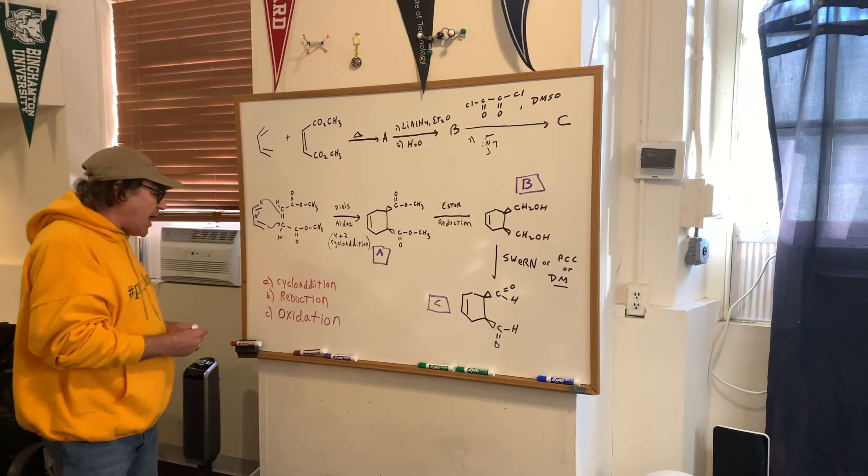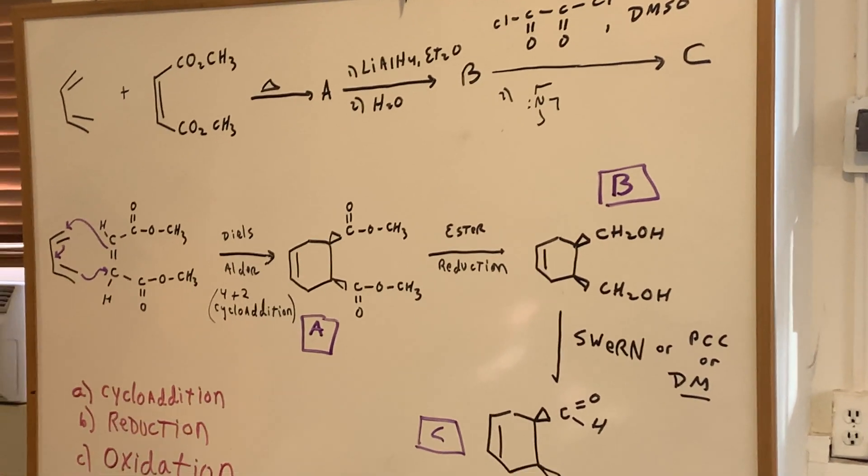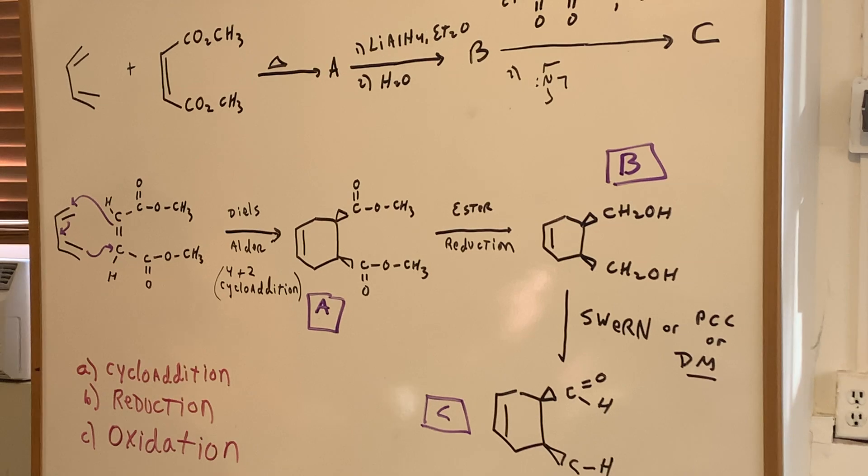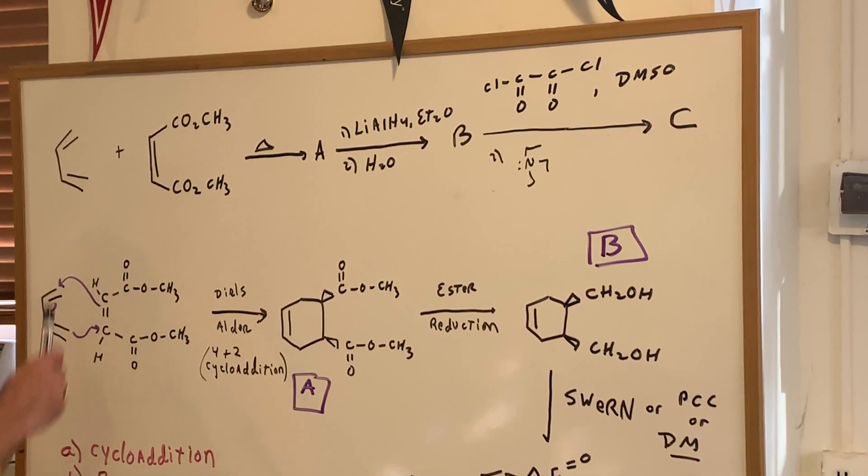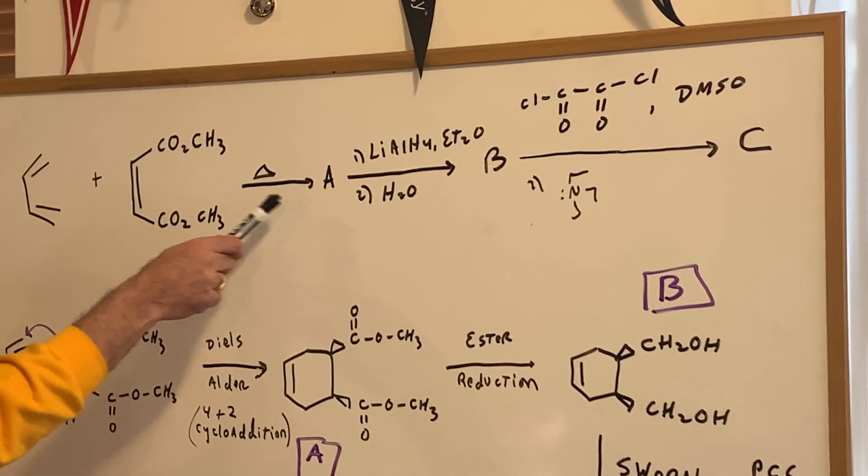So come over and let's have a look. I'm going to do a three-part reaction. I'm going to do a cyclo addition, followed by a reduction and an oxidation, which I'll cover tonight. In the very first step, I want to react a conjugated diene with a dienophile to get A.